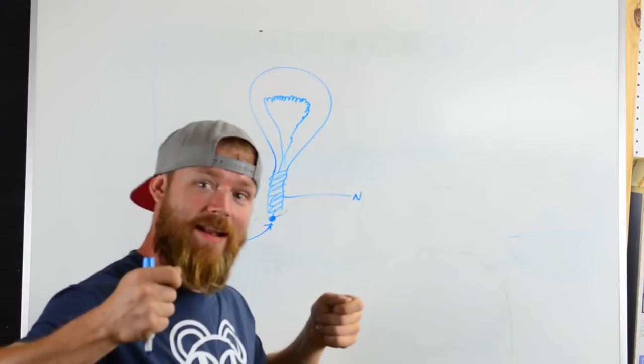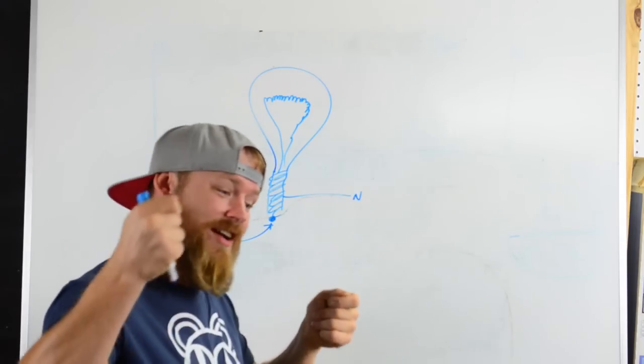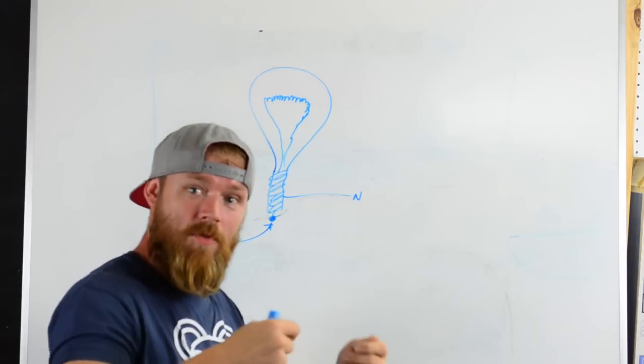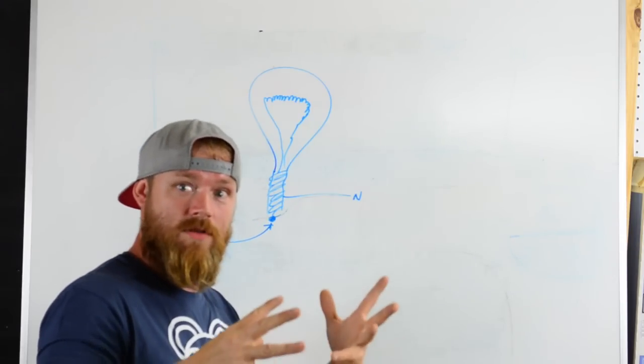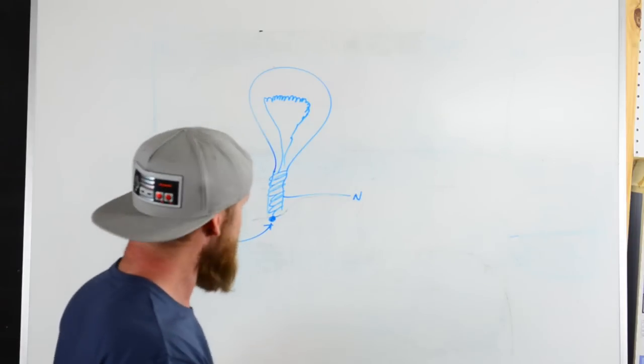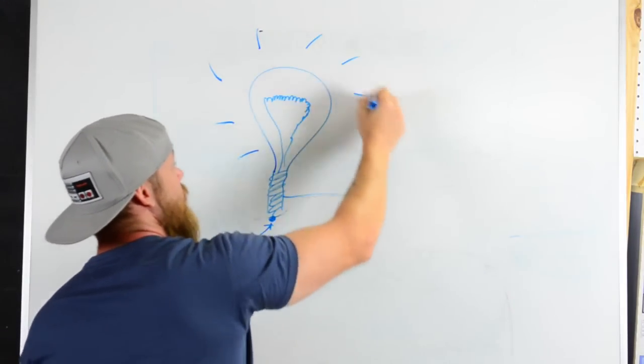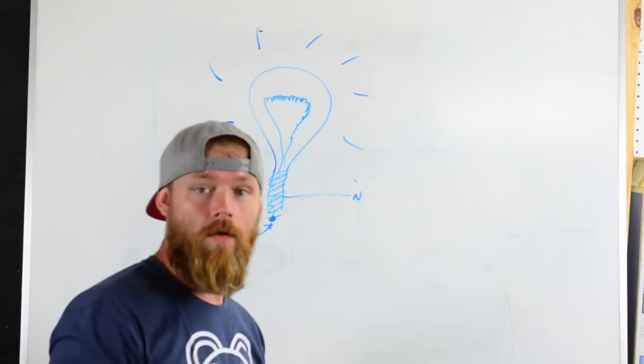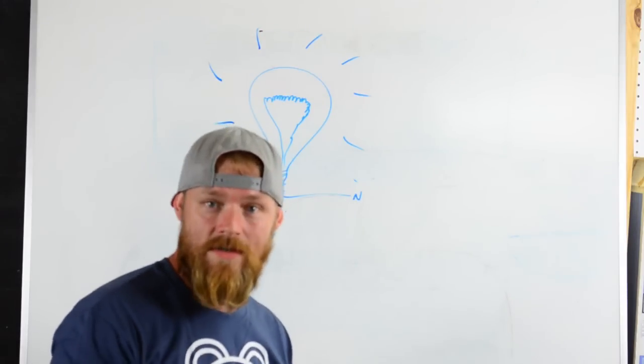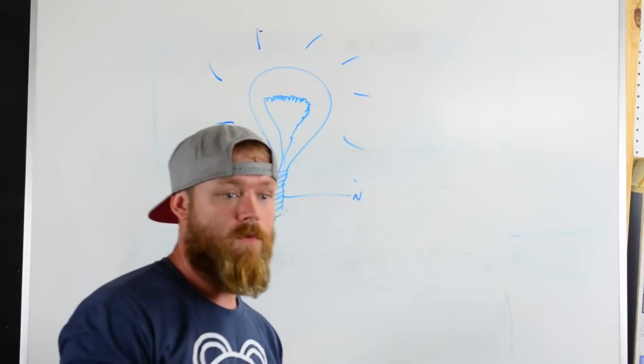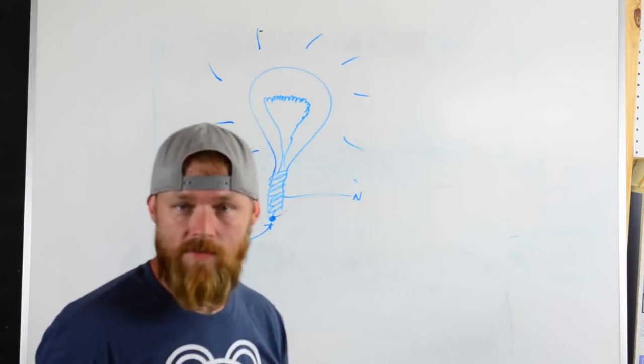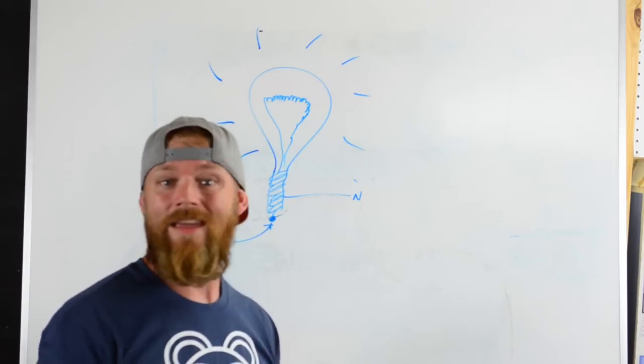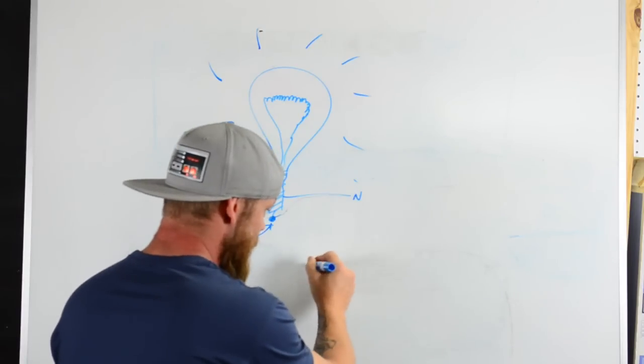Instead of touching that hot and the neutral together, you're touching them to a light bulb, to a load. And you notice when you hook it up to a light bulb, nothing bad happens. The light just lights up. Well, the light bulb lighting up is a wanted effect of sending a bunch of current through a really tiny wire that's wound up in a coil. Toasters have these little elements, coils of wire that go all the way through the thing.